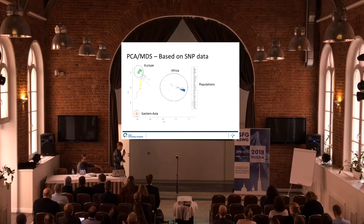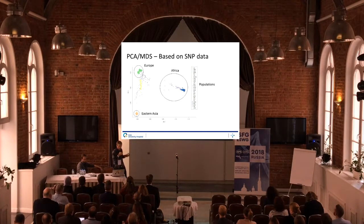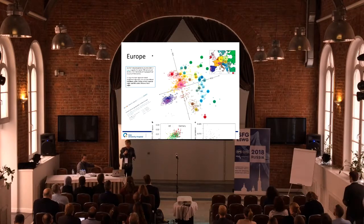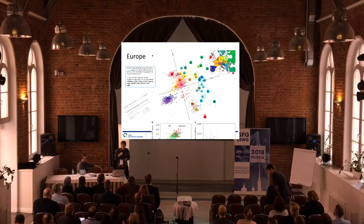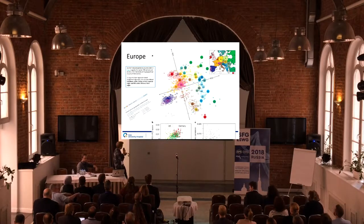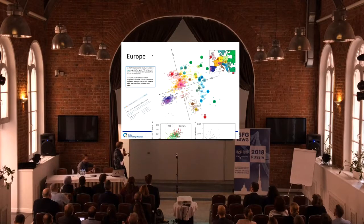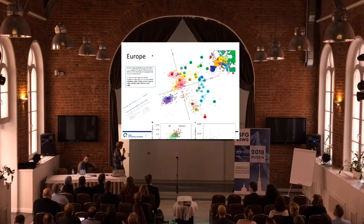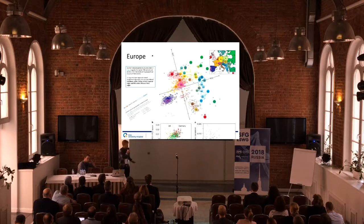This is basically based on the 1000 Genomes data set. There's also been a recent study to see what we can return to the group. They did the same analysis, and if you look quickly you can see that the map, where we have plotted each individual, kind of resembles the map of Europe. Using a regression method, they could pinpoint the birthplace of persons within about 300 kilometers, which is really good.